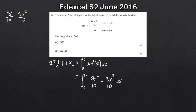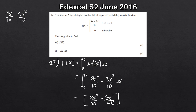Integrating by adding one to the power and dividing by the new power: 9x squared over 10 becomes 9x cubed over 30, and minus 3x cubed over 10 becomes minus 3x to the 4 divided by 5 — this is standard A-level integration. Evaluating between 0 and 2, plugging the limits in gives E[X] equals 1.2 kilograms. That's the mean weight.